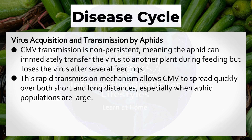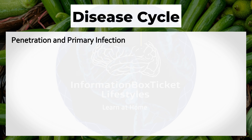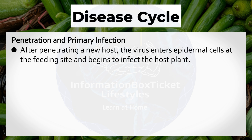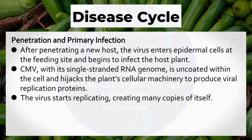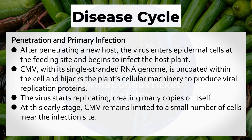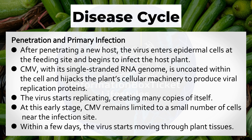This rapid transmission mechanism allows CMV to spread quickly over both short and long distances, especially when aphid populations are large. After penetrating a new host, the virus enters epidermal cells at the feeding site and begins to infect the host plant. CMV, with its single-stranded RNA genome, is uncoated within the cell and hijacks the plant's cellular machinery to produce viral replication proteins. The virus starts replicating, creating many copies of itself, and at this early stage remains limited to a small number of cells near the infection site.